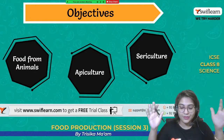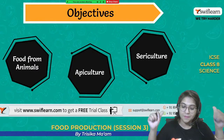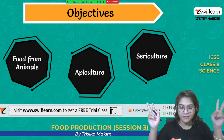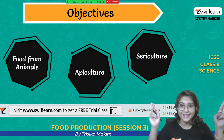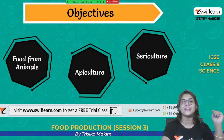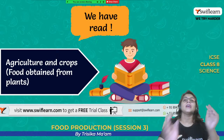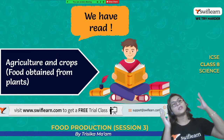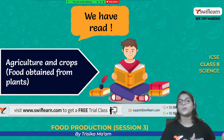From animals we mainly get meat, milk, and egg. We also get honey from honey bees, which also comes under animals. So let's see what all we are going to get from animals today. We have already studied about the different crops we get from plants in the previous session, and that is known as agriculture.